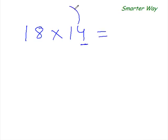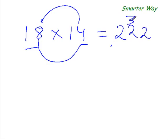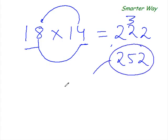So first thing, add this 4 to 18. 18 plus 4 is 22. Right. So 8 times 4 is 32. So carry forward 3, write 2 here. 22 plus 3 is 25. So the answer is 252. That's your answer.